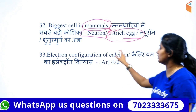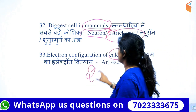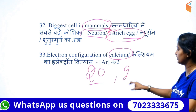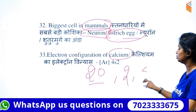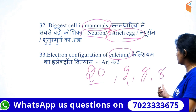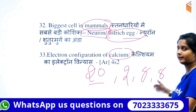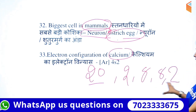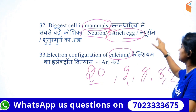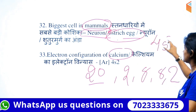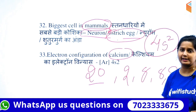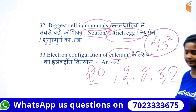Electronic configuration of calcium — atomic number 20. You can write it as 2, 8, 8, 2. That is 2+8=10, and 10+8=18, then 18+2=20. In S-P-D-F notation, the outermost shell gets 4S2.